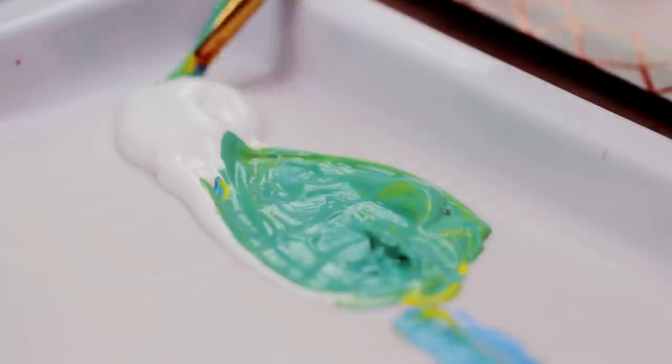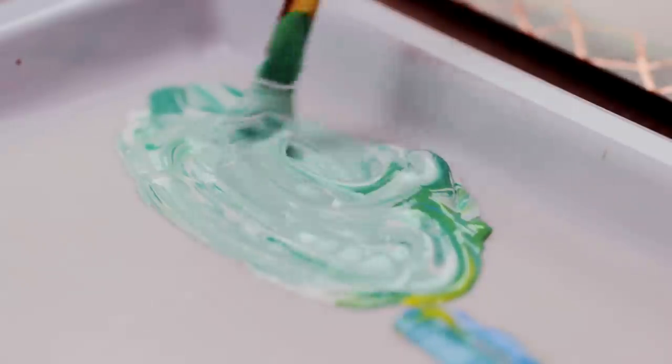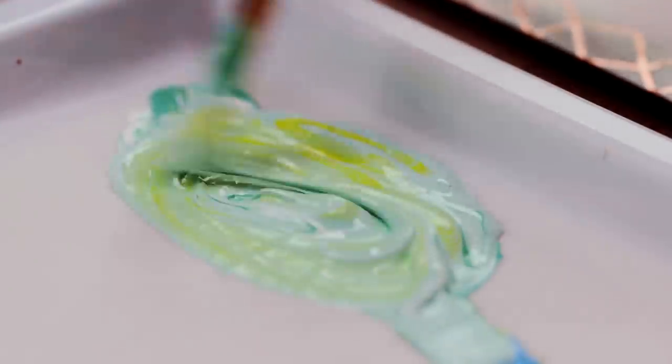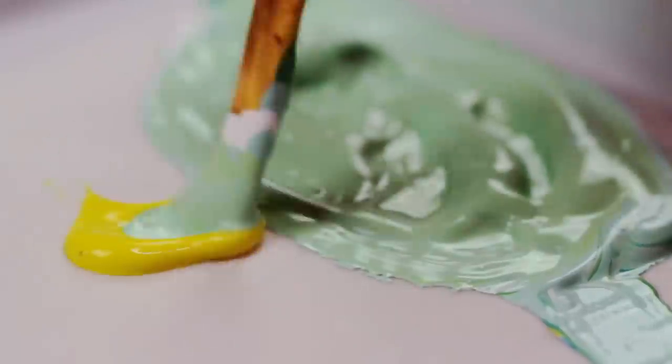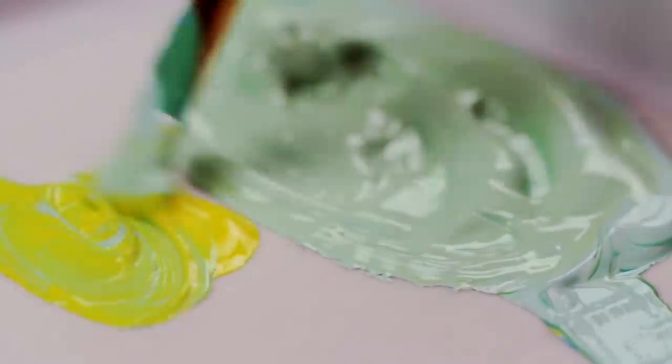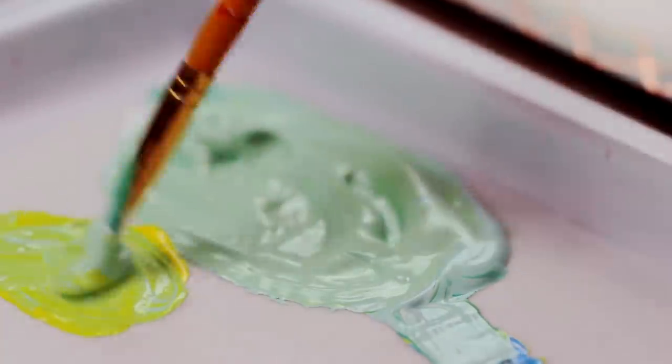As you can see, the more lemon yellow I add, the more greenish the blue shade becomes and that's what you want. Next to it, I also mixed a shade that is even more greenish using the first mixed color and even more yellow.